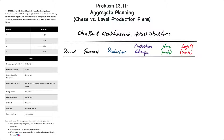The table includes: the period, the forecasts, the production. I also included a column to indicate the change in production from one quarter to the next, which will help determine whether or not we will need to hire or lay off. I've also included quarter four production of 1500 units to start.